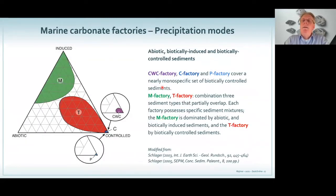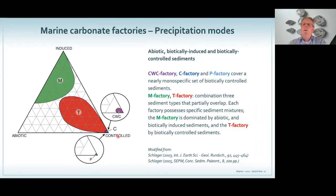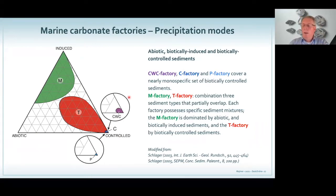Carbonate factories precipitate — they produce their own grains. It's not source to sink, it's source and sink. They are the source for the sink. When you look at the M factories, they induce and enable carbonate to precipitate. When you look at the T factory, it's partially controlled, partially abiotic — at that time we thought about ooids as the abiotic part. When you look at all the other factories, they're really controlled: the biota steer the amount of carbonates being formed. So precipitation really counts.